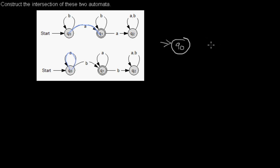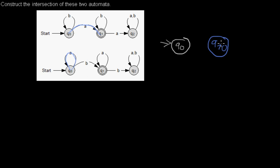That means we create in our intersection automaton a new state which I name Q01. The zero is from the first automaton and the one is from the second one. Of course you can name the state as you like, but I choose that name so that it will be easier for you to follow.